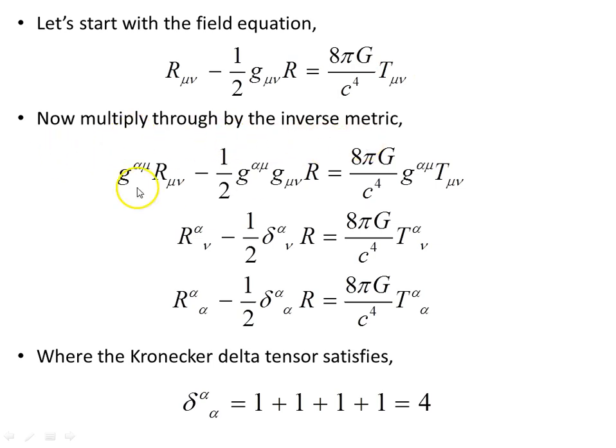Now multiply through by the inverse metric g^αμ, here, then here, and we'll notice that the μ here and the μ here sum out, and we're left with, next step down here,